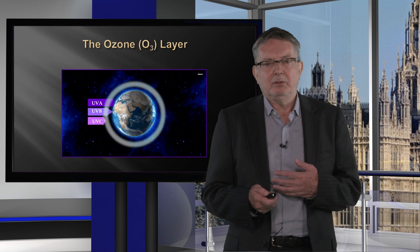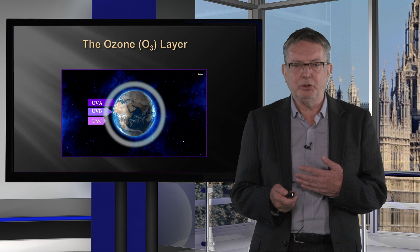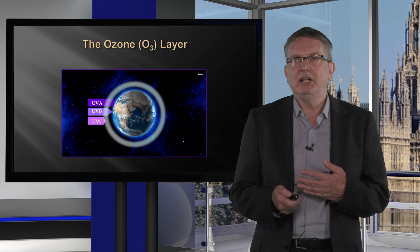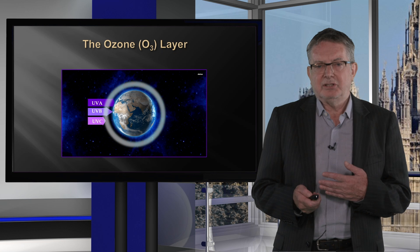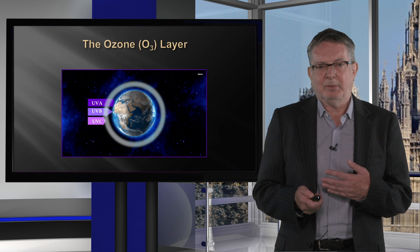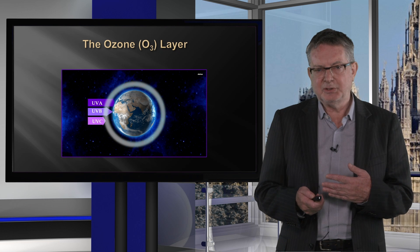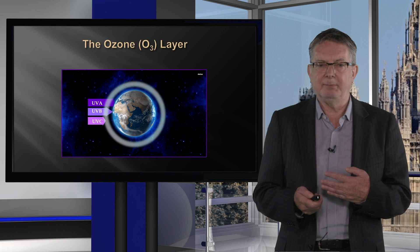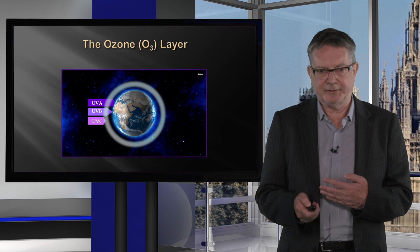The ozone layer protects us from UVC, absorbs most UVB, and has very little effect on UVA. The impact of ozone depletion where most people live is relatively modest — there is much more impact from people taking holidays in sunny locations.